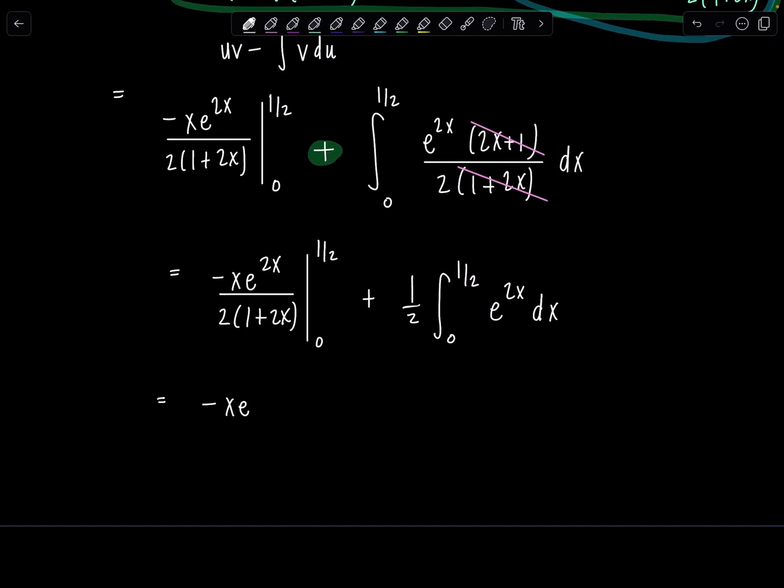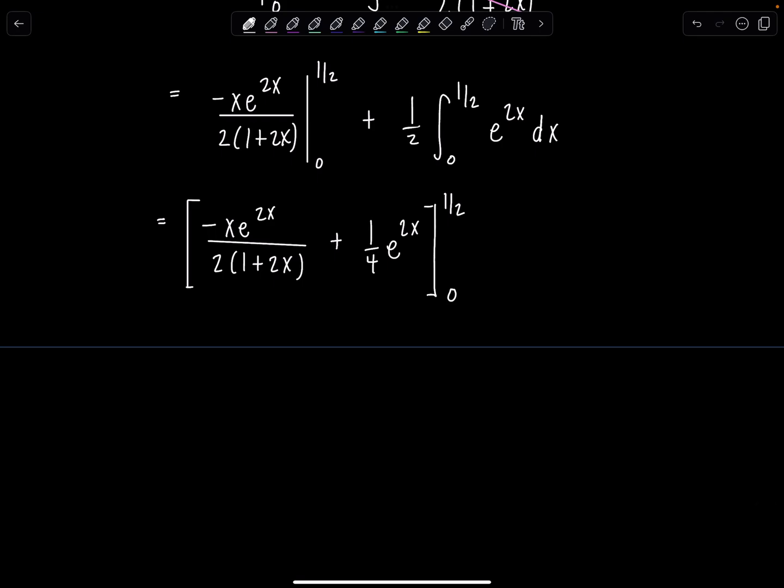From here we should be ready to roll. So negative xe^(2x) over 2 times (1 plus 2x), plus antiderivative of e^(2x) is going to be 1/2 e^(2x). And I already have another 1/2. So that's 1/4 e^(2x). And then now I'm just going to say we're going to evaluate everyone from 0 to 1/2 all together. You don't have to do it this way. Sometimes I see people, they'll evaluate this part of the limits and then do this after. But I just feel like it's cleaner when you do it all in one step.